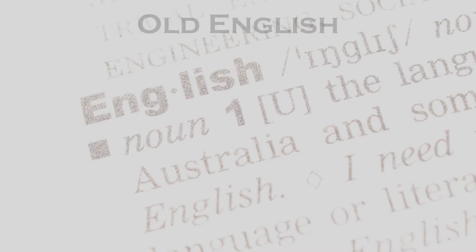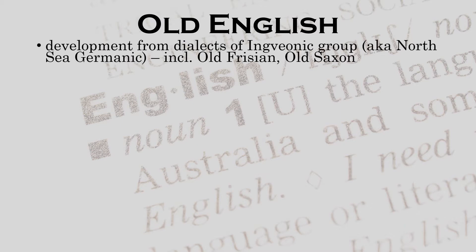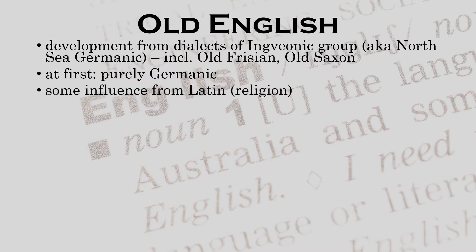Let's first have a look at how the language started out. Within Saxon England, a language began to develop from the group of Ingvaeonic dialects, a group also known as North Sea Germanic. It was a group that included, among others, Old Frisian and Old Saxon. At first, this language was purely Germanic — there was hardly any influence from the Celts, who had been driven out.